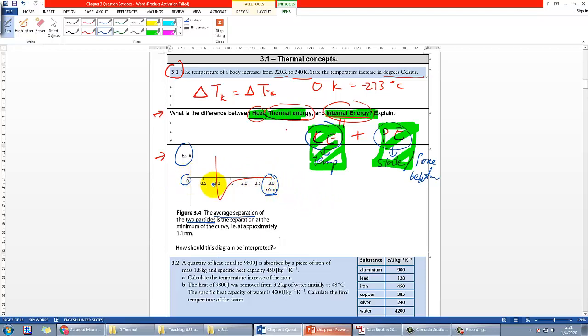That means if you try to separate two particles far apart enough, then the potential energy is zero. When you are at this side, the potential energy becomes high. What does that mean with high potential?